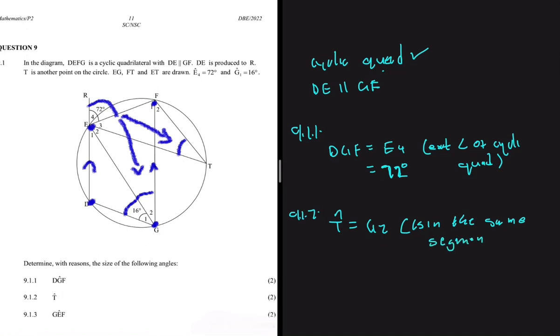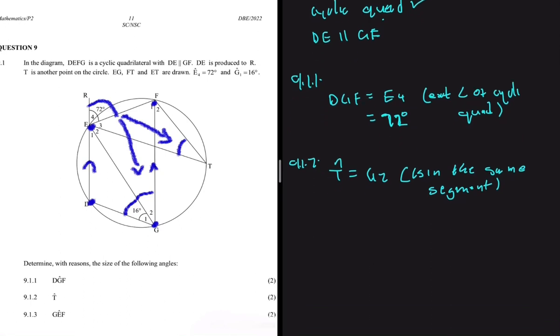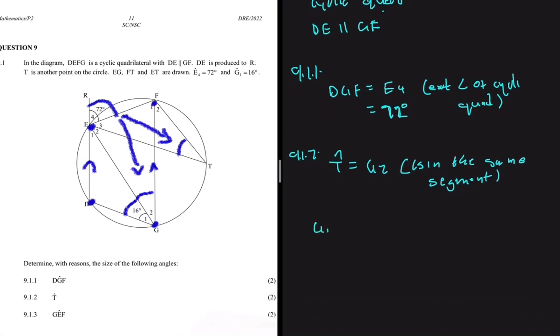So now all we need to do is determine the size of G2. But we know that G1 plus G2 is equal to 72 degrees - that is just angle DGF.